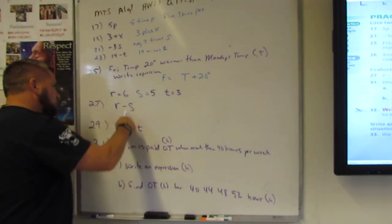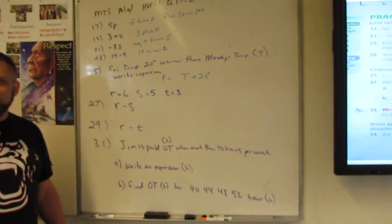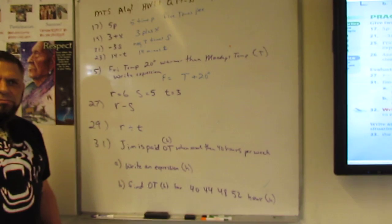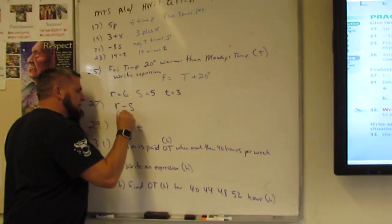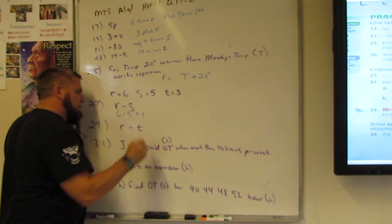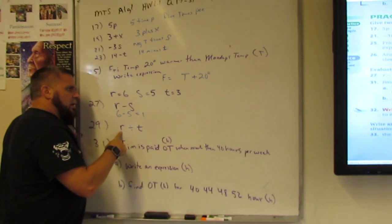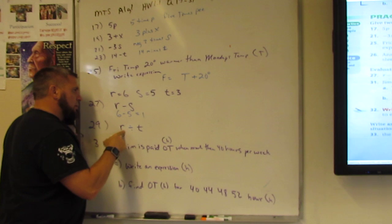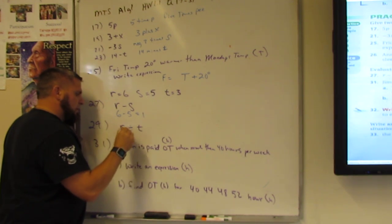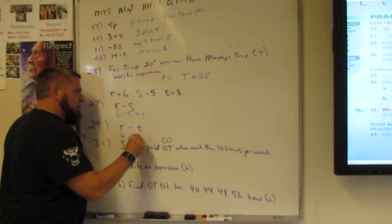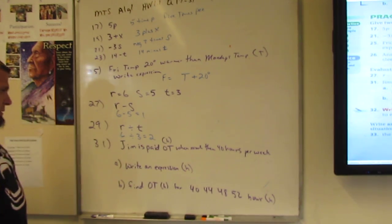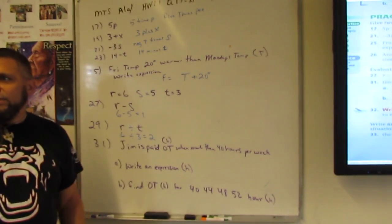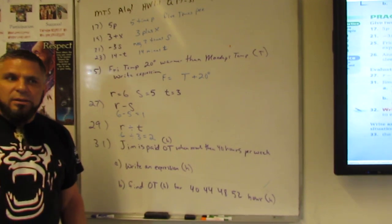Next. R minus S. What do we do? 6 minus 5. That's it. 6 minus 5 equals? 1. Done. And then R is? 6. And T is 3. And divided by 3 equals? 2. 2? Oh. Okay. All right. Done. That was easy. Yeah?